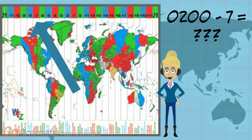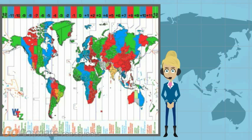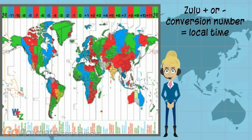Wait. You cannot subtract 7 from 0200 hours. What do we do next? You need to know that midnight, 0000 hours, is the same thing as 2400 hours, but we only use 2400 hours in special cases. This is a special case. First, you need to add 24 to 0200 hours — you get 2600 hours. Now you can subtract 7 from 2600 hours. You get your final answer of 1900 hours. To review: to convert Zulu time to local time, take Zulu time, add or subtract the conversion number, and that will give you your local time.